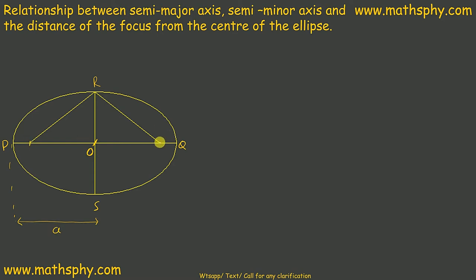This distance is A. This is the focus. This is also the focus. Focus to the center is C. This is my semi-minor axis, OR and OS. This is B.